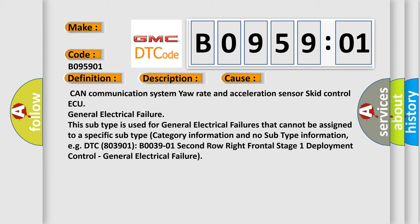For example, DTC B003901, B0039-01, second row right frontal stage 1 deployment control, general electrical failure.